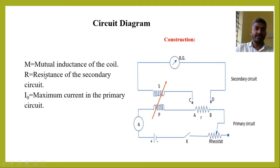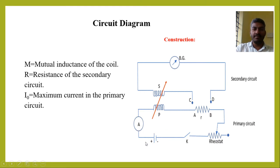Let M be the mutual inductance of the coil. R is the resistance of the secondary circuit, and for this entire circuit, the total resistance is capital R. In the primary circuit, let I₀ be the maximum current.